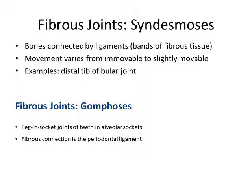Now, two types of cartilaginous joints: synchondrosis and symphysis. Synchondrosis joints are those where bones are attached by hyaline cartilage. If hyaline cartilage connects the bones, that is synchondrosis. If fibrocartilage connects the bones, that is symphysis. For example, the first rib and the manubrium of the sternum are connected by hyaline cartilage — that is synchondrosis. The hip bones at the pubic symphysis are connected by fibrocartilage — that is symphysis. The vertebrae are also attached to each other by fibrocartilage discs — also symphysis.